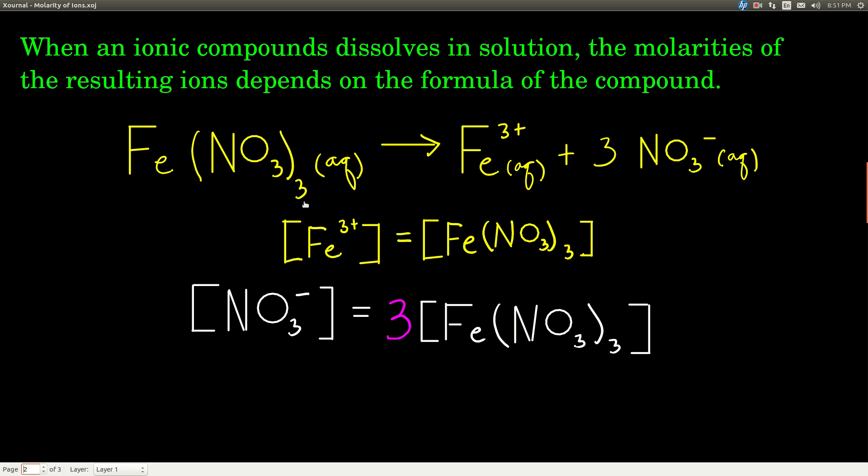So this outside 3 tells you that there are 3 nitrate ions, and because there's an implied 1 after the iron, it tells you there's 1 iron 3 ion. So we can say that in this solution, the concentration of the iron 3 ion will be the same as the concentration of the iron 3 nitrate that we make, because one of these iron 3 nitrates dissolves and breaks up and makes 1 iron 3 ion.